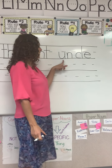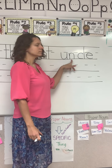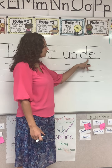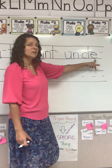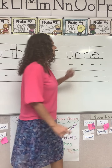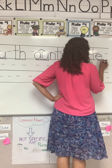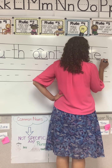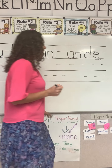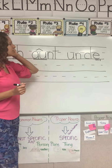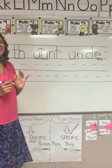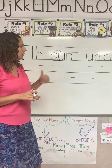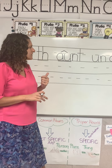Our next word is 'uncle'. What's the word? Good. Your uncle is your mother's or your father's brother. So, uncle is a two-way word. To spell it right, we need to say 'uncle'. How do we say 'uncle' to spell it? Right — uncle.